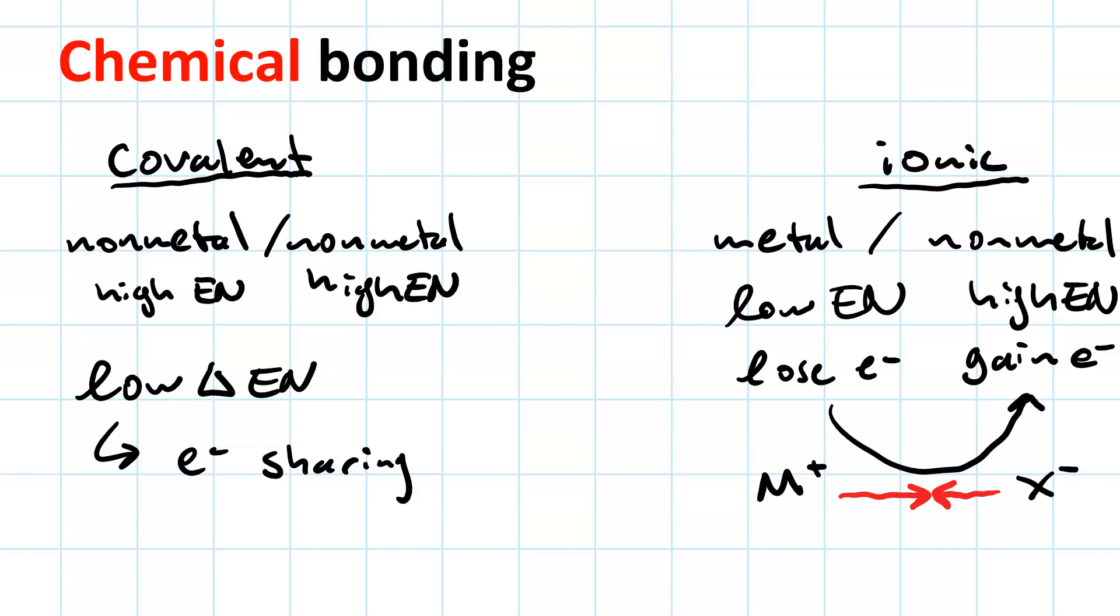And then, of course, this isn't really a binary thing. There actually is a whole range. In the middle, we have what's called polar covalent bonds, where the more electronegative atom gets more of the electron density.